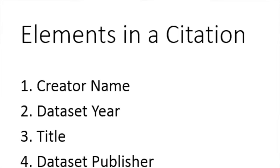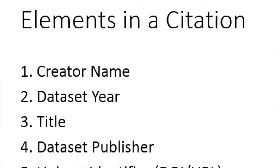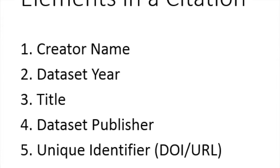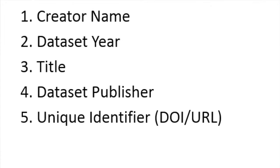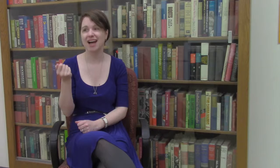Whenever you find a research dataset that you'd like to use, you want to cite it. There are five key elements of a dataset citation, which have been standardized fairly recently because data sharing is a fairly new phenomenon. The first is the name of the creator or creators. The second is the year the dataset was published. Third is the title of the dataset. Fourth is the dataset publisher or repository where the dataset lives. And fifth is a unique identifier — ideally a DOI, a digital object identifier, but a URL is also pretty good.